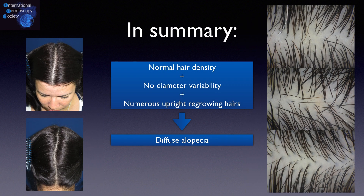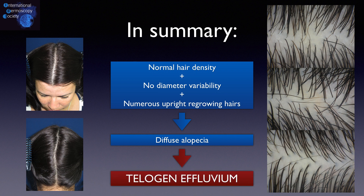In summary, in a case with normal hair density, no diameter variability, and numerous upright regrowing hairs, we can make the diagnosis of telogen effluvium alone. But in the majority of cases, we can see both entities mixed together, making the trichoscopy more challenging.